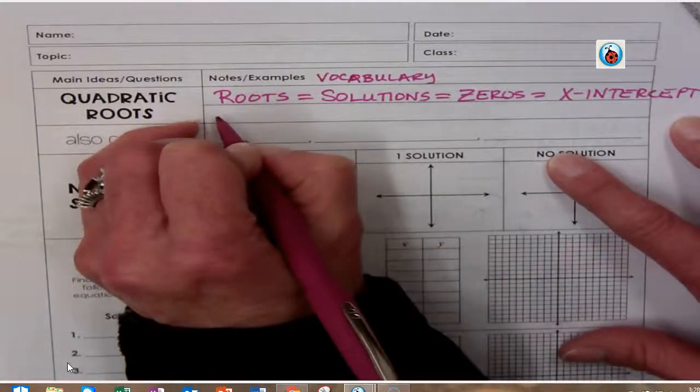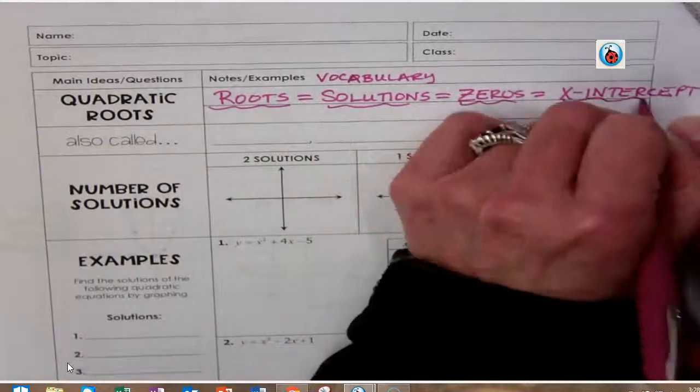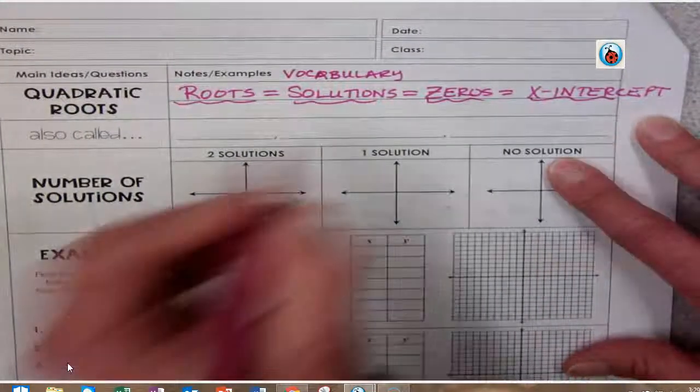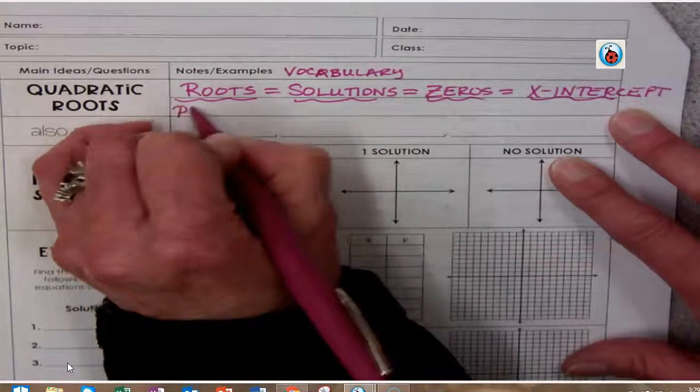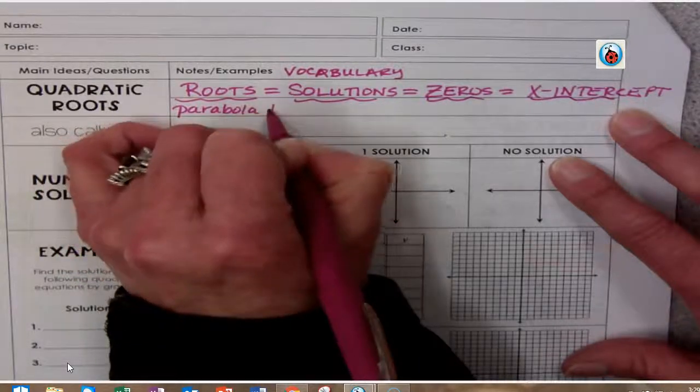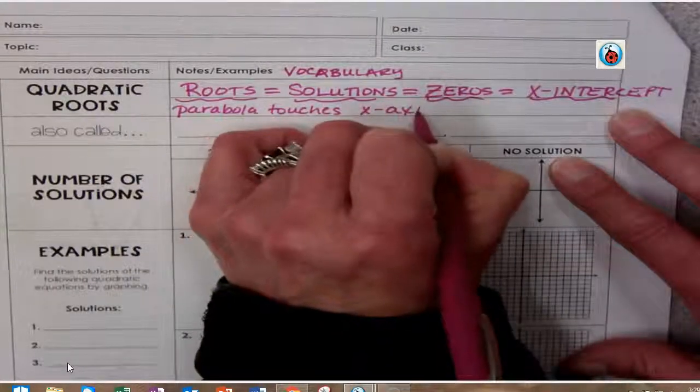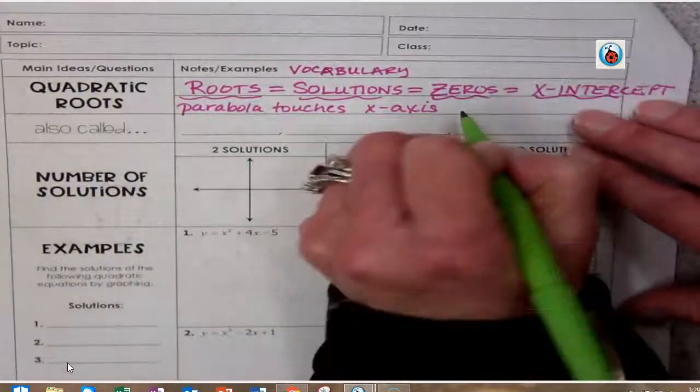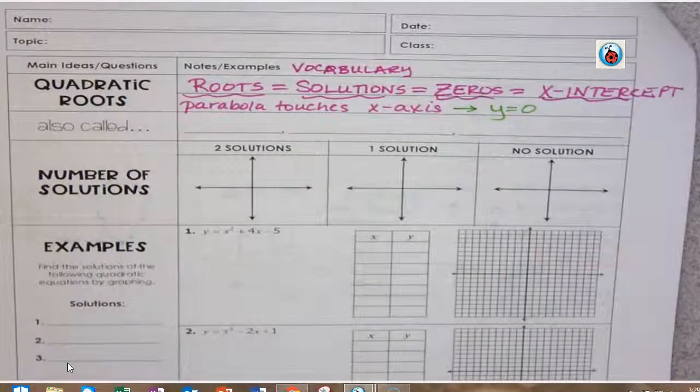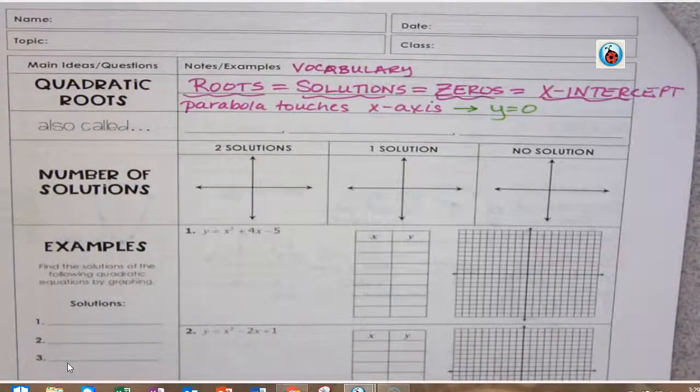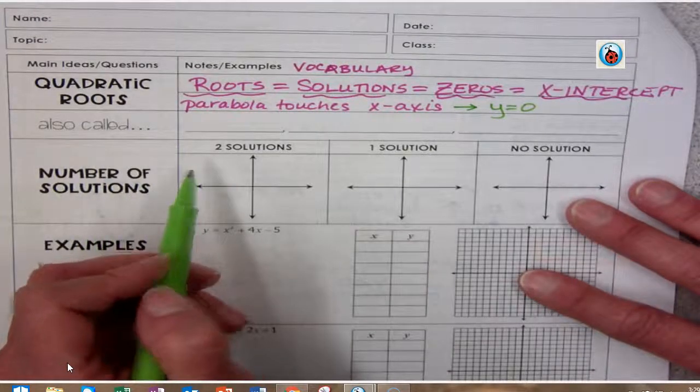This is all the same thing. These are all synonyms you need to know. This is where the parabola touches the x-axis. And the important thing to know is that when this happens, your y is equal to zero. When I'm looking at a parabola here...